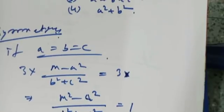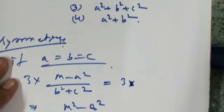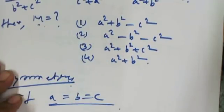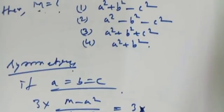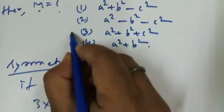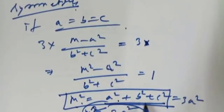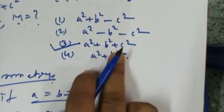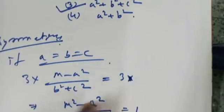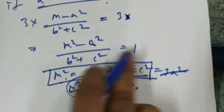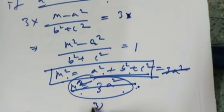So the value of M² is A²+B²+C². Checking the options, option number 3 is the correct option because the value of M² equals A²+B²+C².